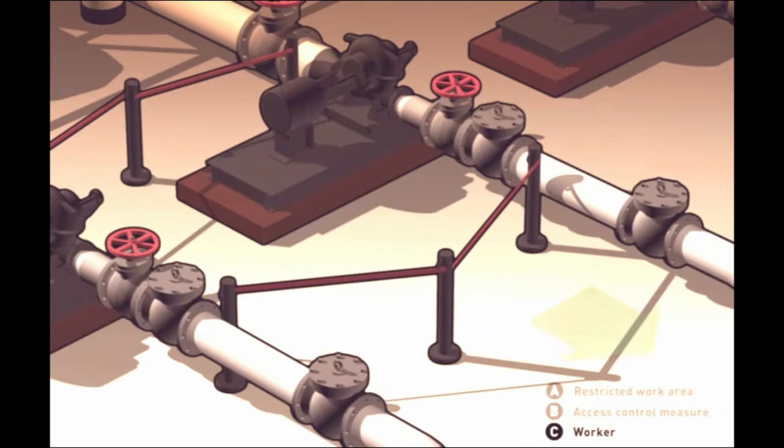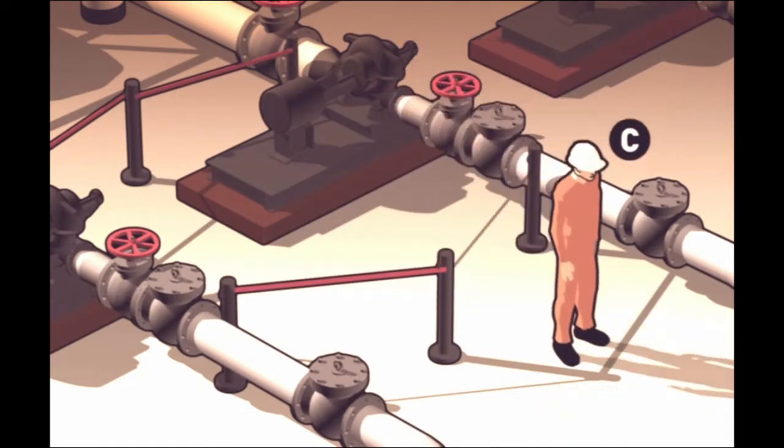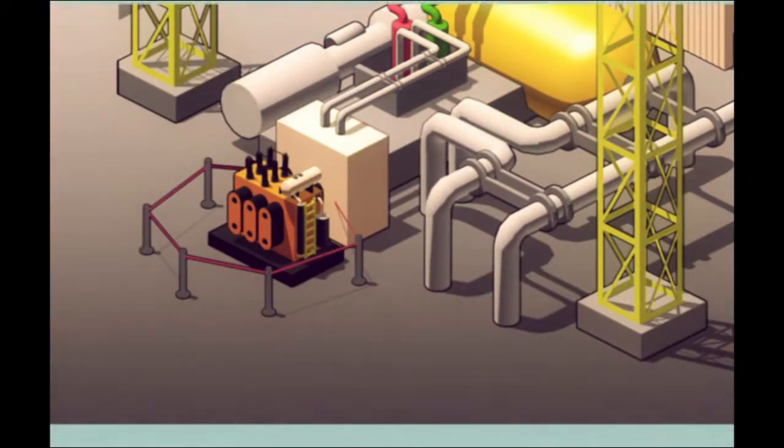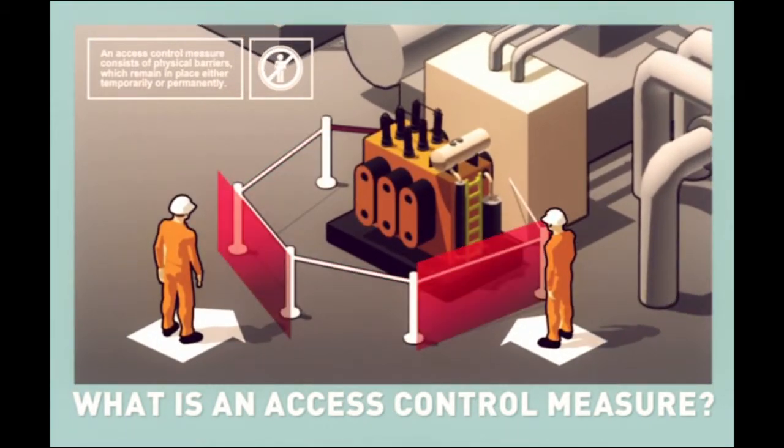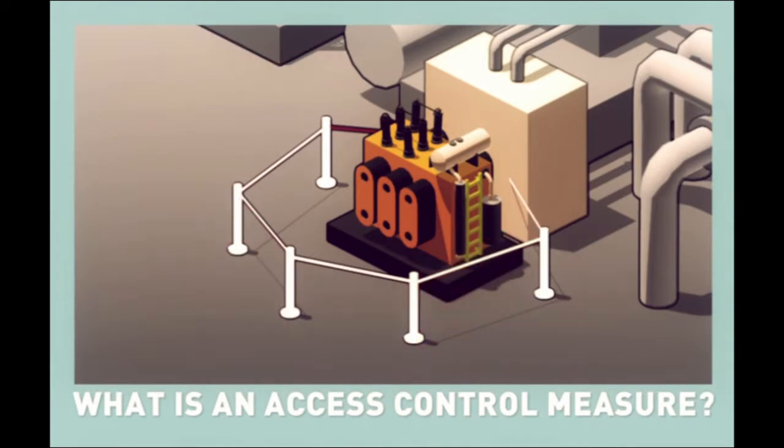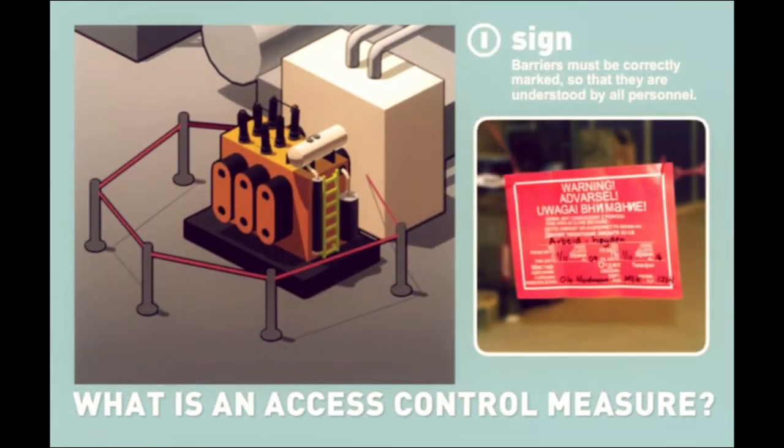This means that no unauthorized personnel shall be within restricted areas. An access control measure consists of physical barriers which remain in place either temporarily or permanently. The barriers must be correctly marked so that they are understood by all personnel.